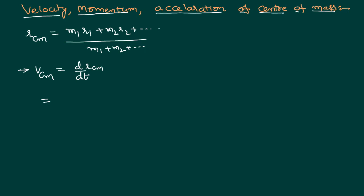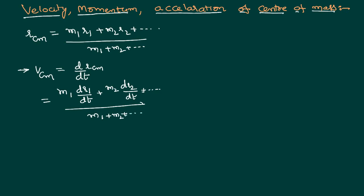We take mass outside the equation and differentiate each term with respect to time: M1 DR1/DT, M2 DR2/DT, and so on, divided by the total mass. The rate of change of displacement of the first body is the velocity of the first body V1; similarly for the second particle V2. So the velocity of the center of mass is: V_CM = (M1V1 + M2V2 + ...) / (M1 + M2 + ...).